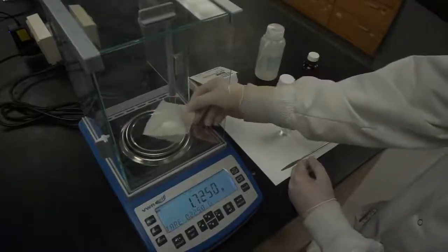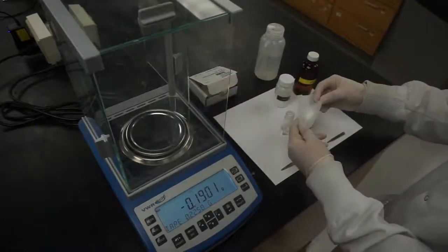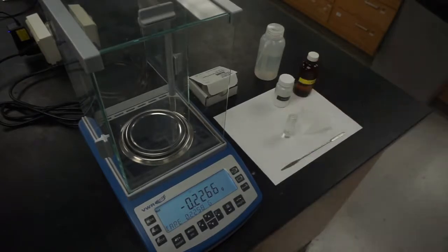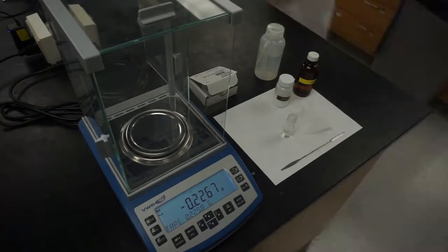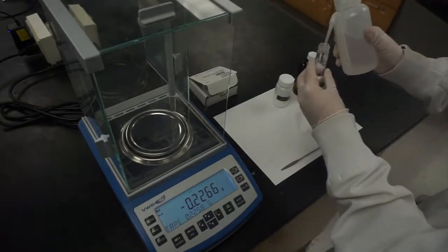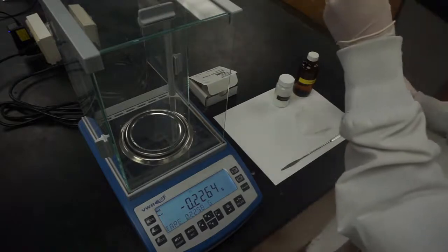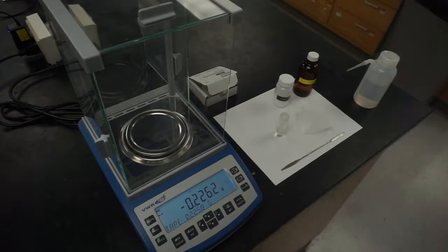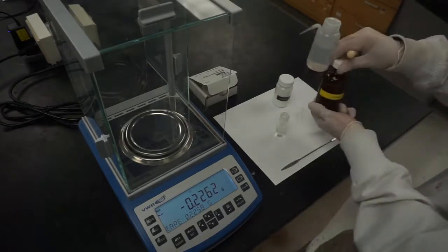Then, gently transfer the sodium bromide into a 5-milliliter conical vial with a spin vane in it, and add about 1 milliliter of DI water and 1 milliliter of 1-butanol to the conical vial.